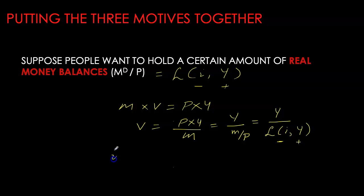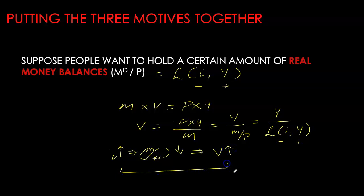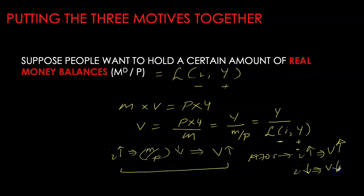For example, if interest rates go up, it causes real demand for money balances to go down, and as demand for real money balances decreases, velocity increases. Velocity and interest rate move in the same direction, which is consistent with the data. In the 1970s, we had high interest rates reaching as high as 20%, and we saw velocity also being very high. When nominal interest rates decline, velocity also starts to decrease.